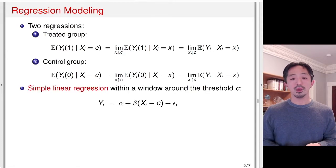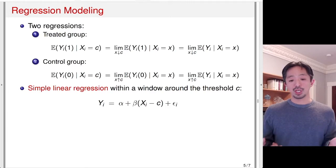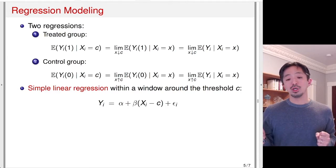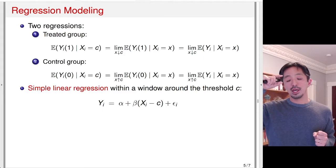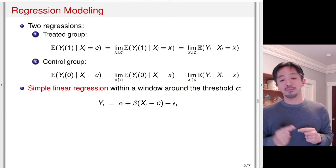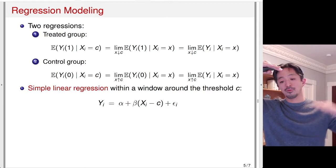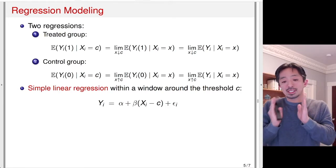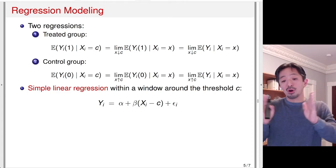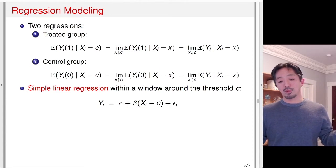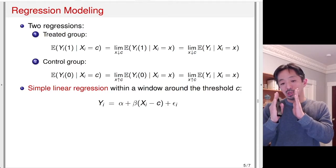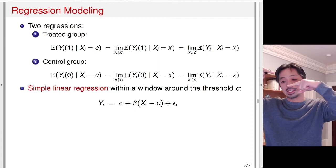The most standard way of doing this is to run simple linear regression. You regress Y on X — usually subtracting the threshold so that the estimated intercept alpha is the estimate at the threshold — and do that from both above and below. We take some window around the threshold; we don't use the entire observation set typically. We use a small window around the threshold and then run the simple regression.